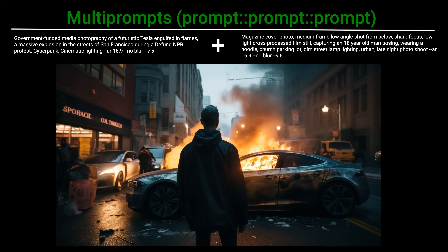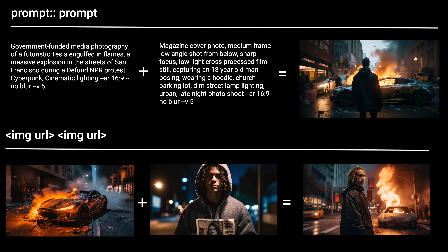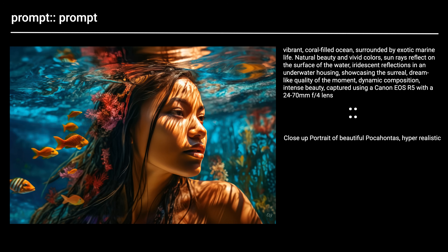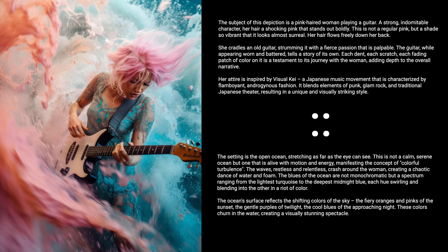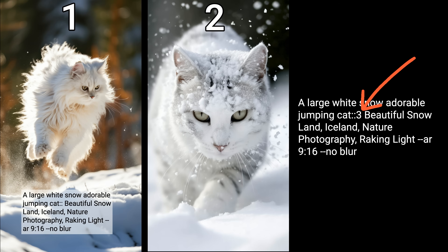Let's deep dive into multi-prompting on Mid-journey. It's possible to blend multiple images together, and additionally you can blend multiple prompts together using double colon signs. In the first prompt, I described an underwater scene in great detail. In the second prompt, I described my subject. Now all I have to do is blend these prompts to produce the final image. The advantage of multi-prompting is you can improve your photography scene by assigning a weight number to individual prompts. For example, I will assign a weight of three to the prompt with the cat and notice how Mid-journey prioritizes the cat in the photo.